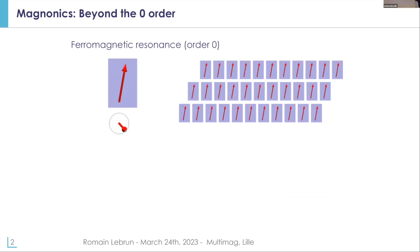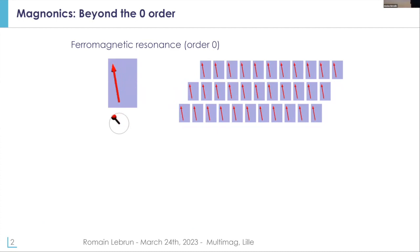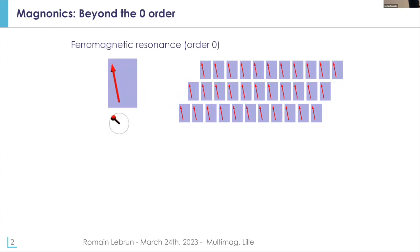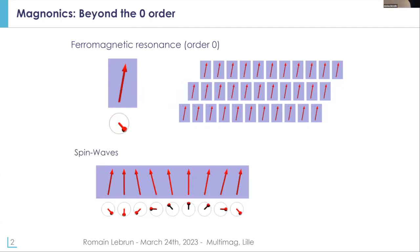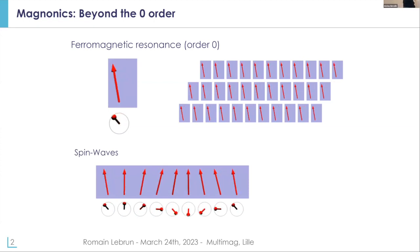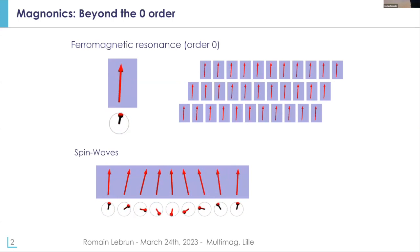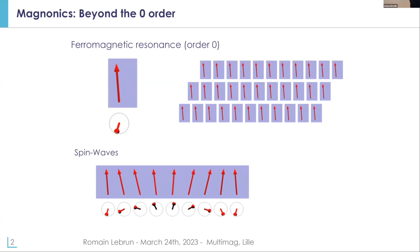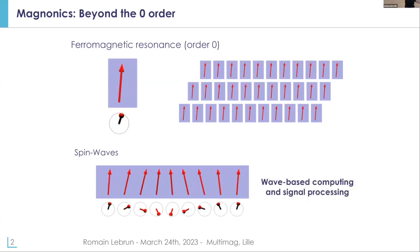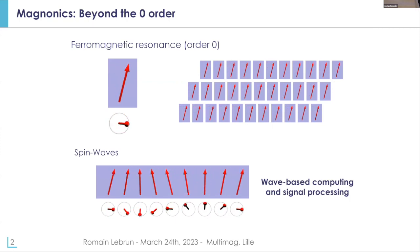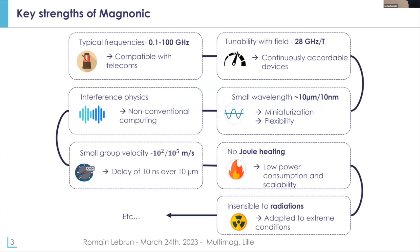In magnetic materials you can always excite the ferromagnetic resonance, which corresponds to all the spins oscillating in phase at the eigenfrequency of the system. But you can also excite propagating excitations called spin waves, where all the spins oscillate with a small dephasing between them. You can characterize those waves by their frequency and by their wavelength, and then you can play with those waves in order to perform wave-based computing, signal processing. This has been studied for about 50 years.